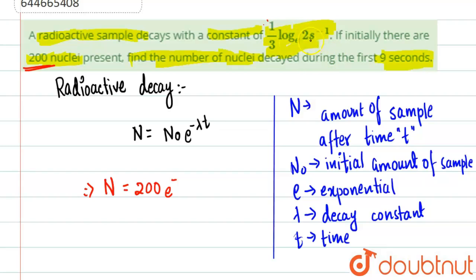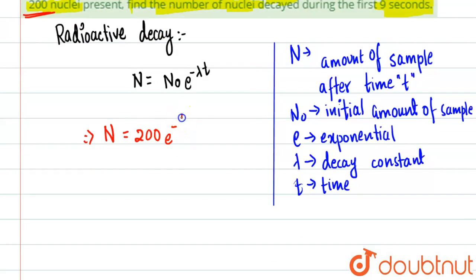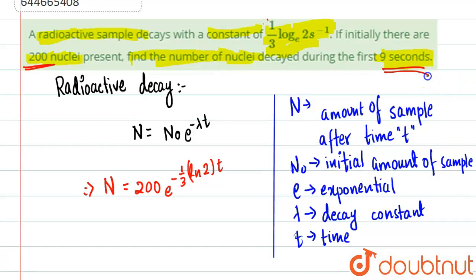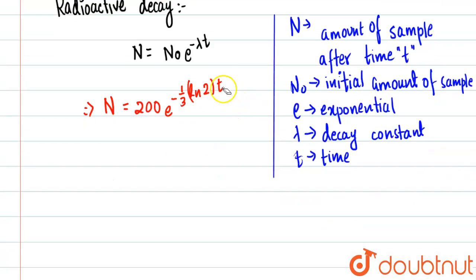Substituting, we write: N = 200 · e^(−(1/3) · ln 2 · t). The time is given as 9 seconds, so we put t = 9. We cancel 3 and 9, giving a factor of 3, so the exponent becomes −3 · ln 2.